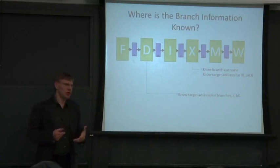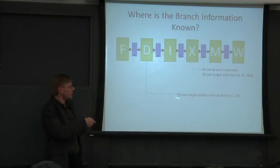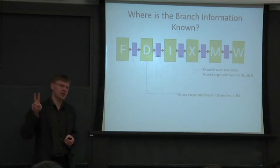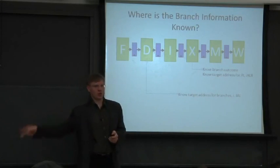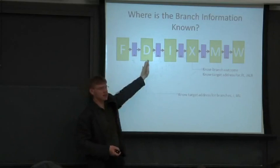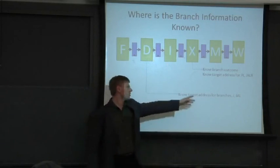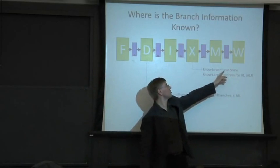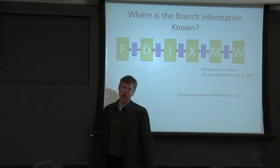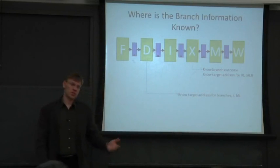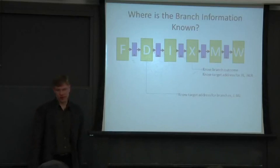So by the time we're done here, we have both of the addresses that the branch could potentially go to. It could go to either the fall through address or the branch target. And we know that at the end of the decode stage. For jump and link registers and jump registers, we don't even have that information. It's not encoded in the instruction anywhere. It's encoded in a register. So we need to go fetch something from the register. It might have to go through the bypass network. So we're going to have to wait.